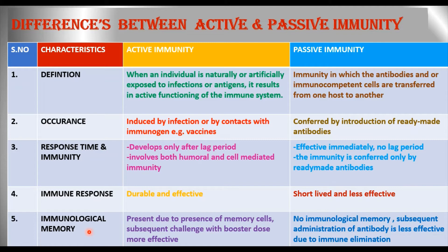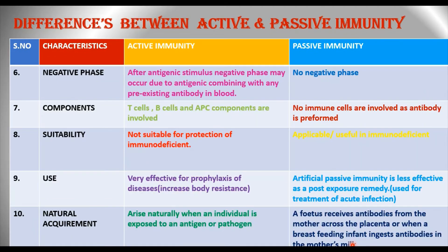Regarding immunological memory: in active immunity, it is present due to memory cells, and subsequent challenge with a booster dose is more effective. In passive immunity, there is no immunological memory, and subsequent administration of antibody is less effective due to immune elimination.